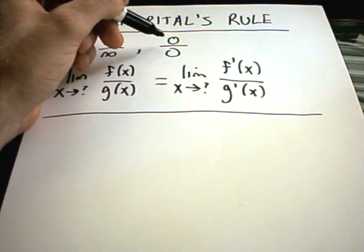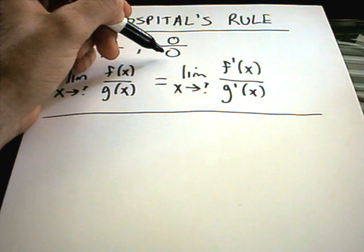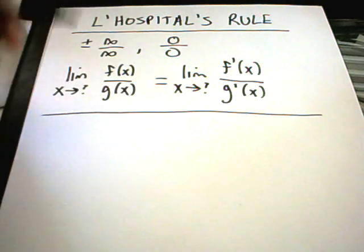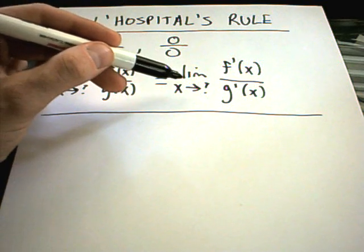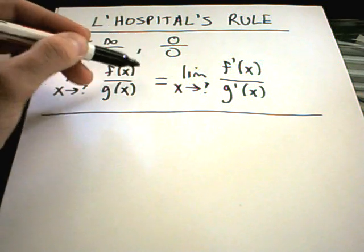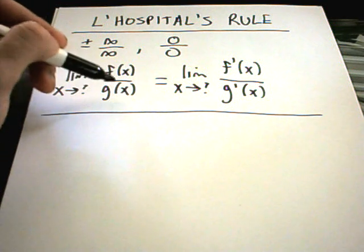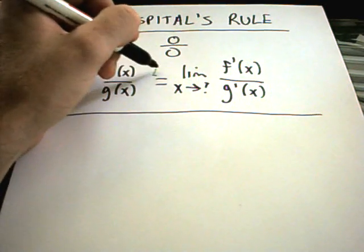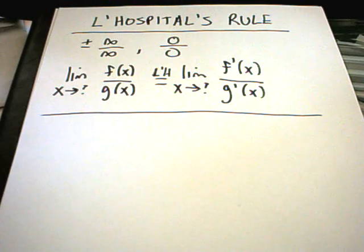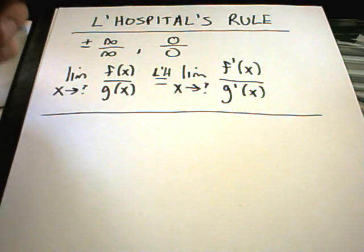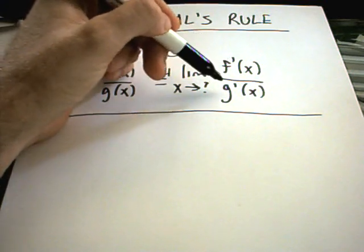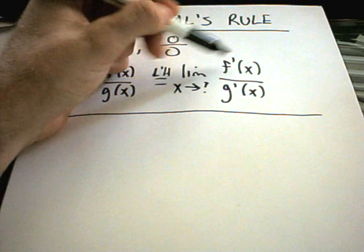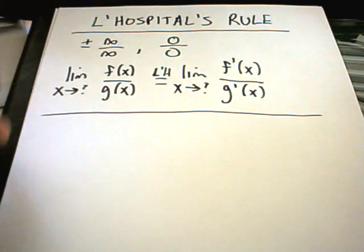Perhaps also the top is going to zero and maybe the bottom is also going to zero. In that case, what you can do is basically turn one limit problem into another limit problem by taking the derivative of the top and dividing that by the derivative of the bottom. They'll sometimes put a little 'L.H.' in between to indicate you're using L'Hôpital's Rule. Be careful — you're taking the derivative of the numerator all by itself, and the same thing with the denominator. You're not using the quotient rule.